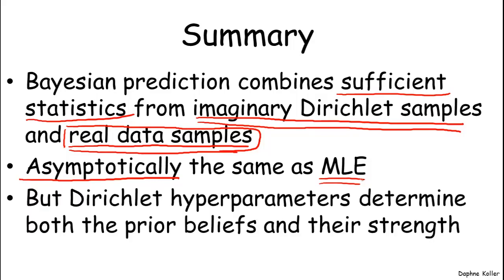But initially, in the early stages of estimation, before we have a lot of data, the priors actually make a fairly significant difference. And we've seen that the Dirichlet hyperparameters basically determine both our prior beliefs initially, before we have a lot of data, as well as the strength of these beliefs,